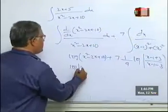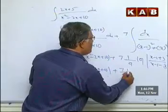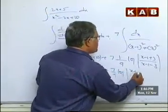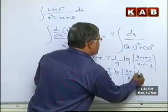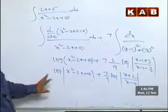So this is log of x square minus 2x plus 10 plus 7 by 9 log of x plus 2 by x minus 4. That is the question.